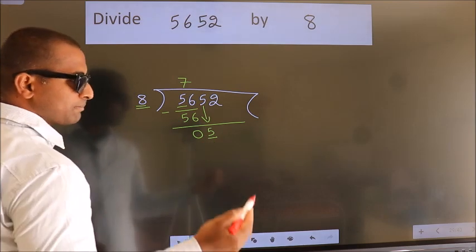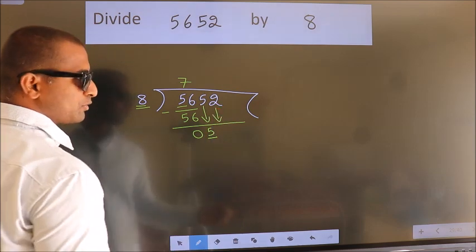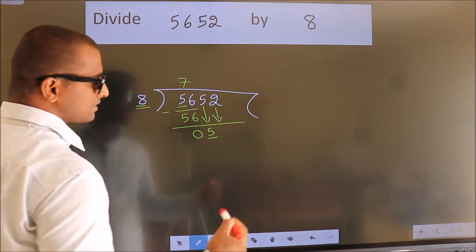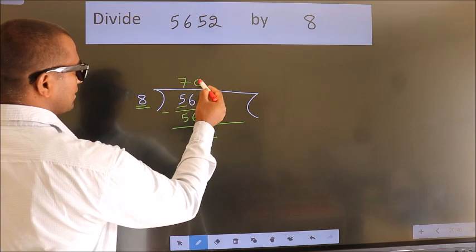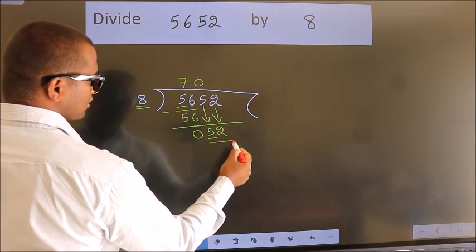So we should bring down the second number. And the rule to bring down second number is put 0 here. Then only we can bring down this number. So 52.